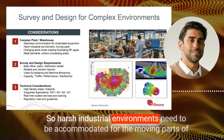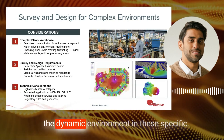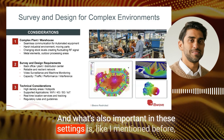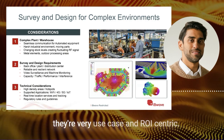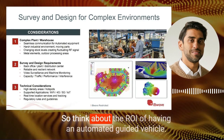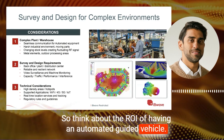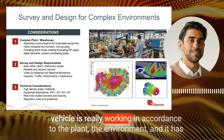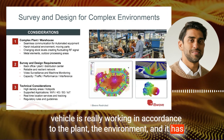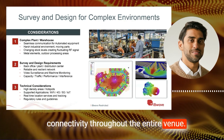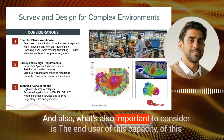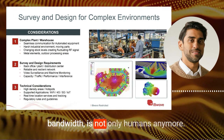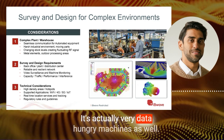Harsh industrial environments need to be accommodated for the moving parts of that dynamic setting. What's also important is that these deployments are very use case and ROI centric. Think about the ROI of having an automated guided vehicle — making sure that vehicle is working in accordance with the plant environment and has connectivity throughout the entire venue. Also important to consider is that the end user of this bandwidth is not only humans anymore; it's also very data-hungry machines.